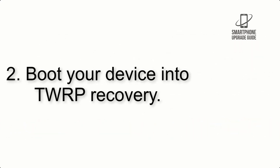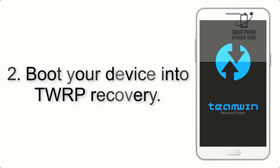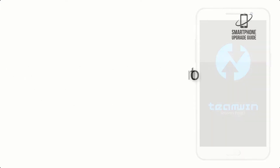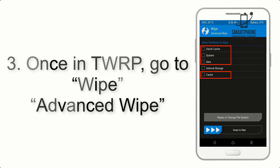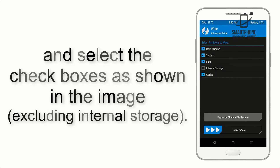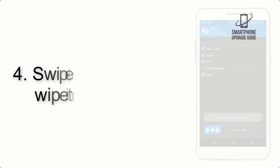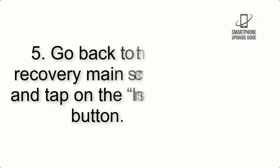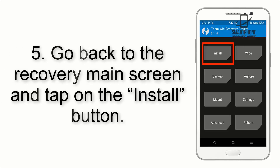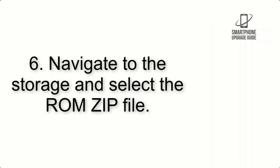Step 2: Boot your device into TWRP recovery. Once in TWRP, click on Advanced Wipe and select the checkboxes as shown in the image, excluding internal storage. Step 4: Swipe the button to wipe the device.